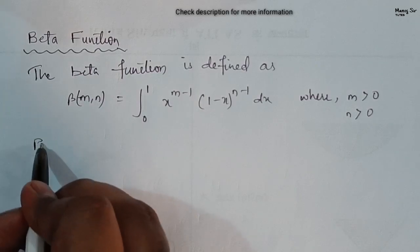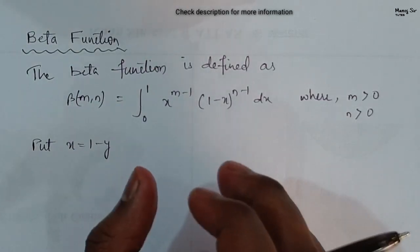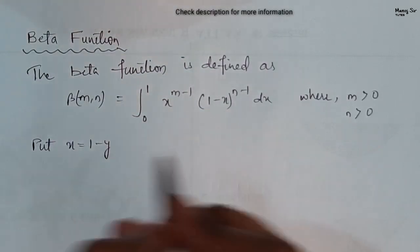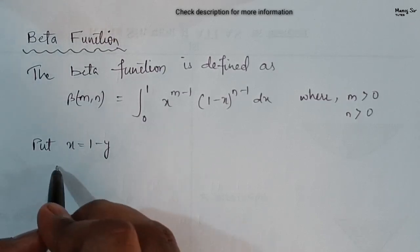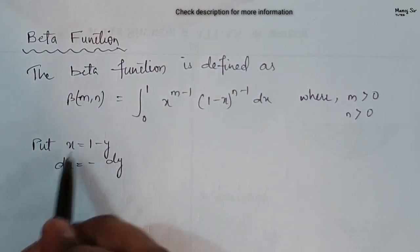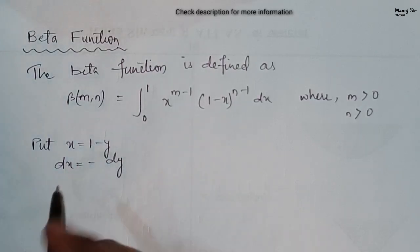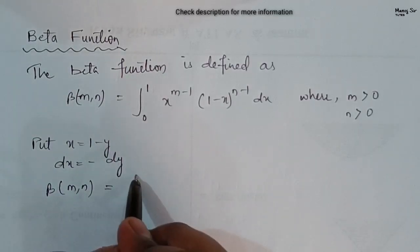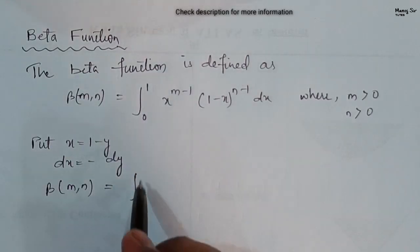This is the general formula. Now put x equals to 1 minus y, because we want to derive an important property of beta function. On differentiating, you will get dx equals to minus dy. So we can write Beta of m comma n equals integration — the limit 0 to 1 is the limit of x, but here we will write the limit of y.